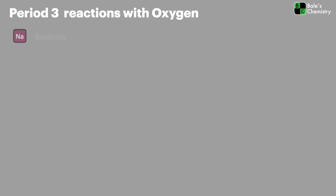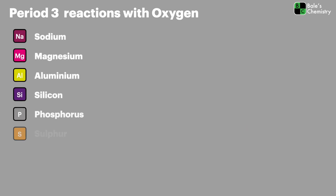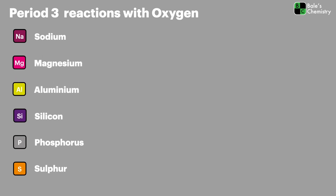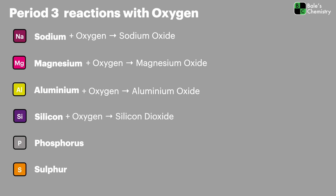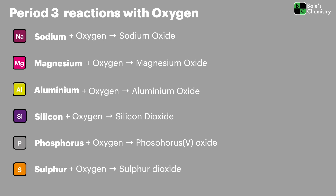We're now going to look at the reactions of the period three elements with oxygen. We won't cover chlorine and argon as they don't really react with oxygen to form oxides, although oxides of chlorine are made through a different chemical process. So we'll look at: sodium forming sodium oxide, magnesium forming magnesium oxide, aluminium forming aluminium oxide, silicon making silicon dioxide, phosphorus making phosphorus pentoxide (P4O10), and sulfur making sulfur dioxide.